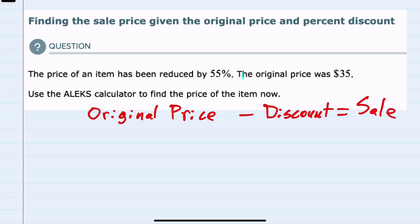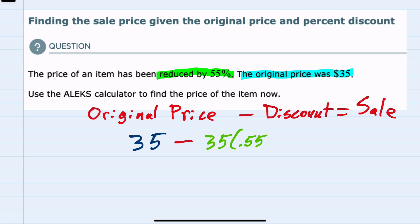In this example, we're told that the original price is $35. We will subtract the discount. However, the discount is not a dollar amount — it hasn't been discounted by, say, $10. It's been discounted by 55%. So the discount is going to be 55% of that original price, $35. To find that discount, we would take $35 and multiply it by 0.55.